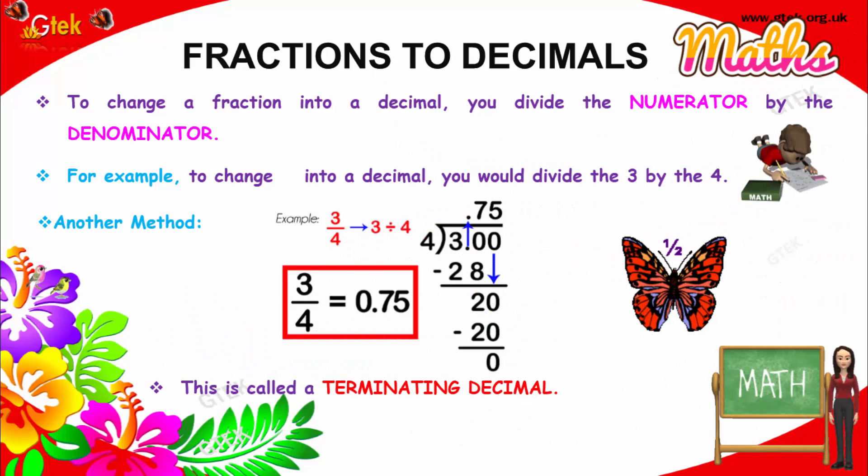Fractions to decimals. To change a fraction to a decimal, you need to divide the numerator by the denominator.